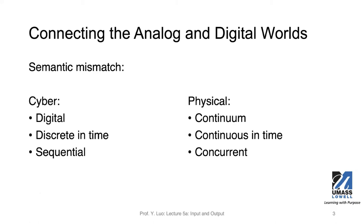As we mentioned earlier, a cyber-physical system connects the cyber world with the physical world. In the physical world, you don't have everything in digital signal format. Many physical systems are continuous, as opposed to the digital values we see in cyber systems. Physical processes are continuous in time, whereas in the computing domain, we use discrete events or signals in time.